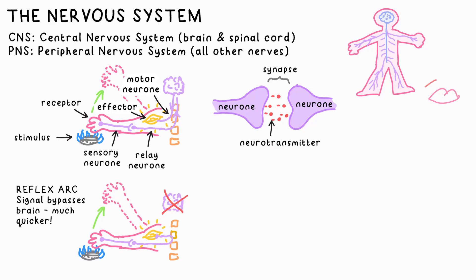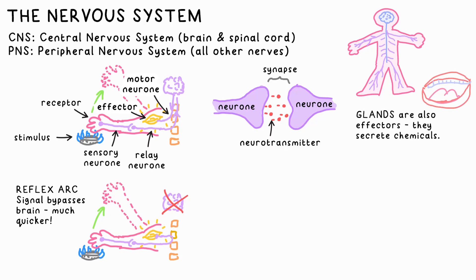This, of course, is much faster than you making a conscious decision. Glands can also be effectors, which produce specific chemicals your body needs. For example, your salivary glands in your mouth make saliva when you eat food.